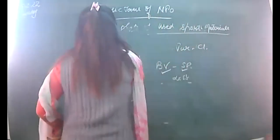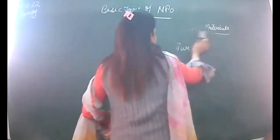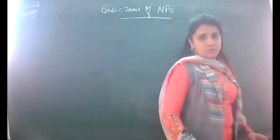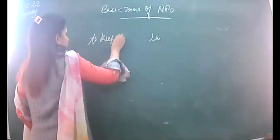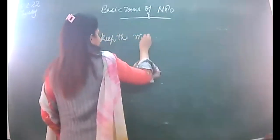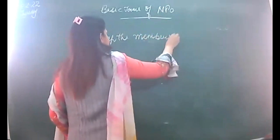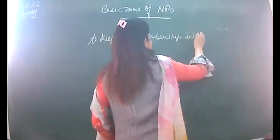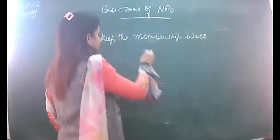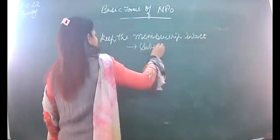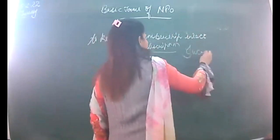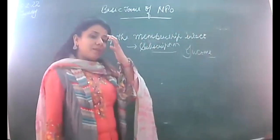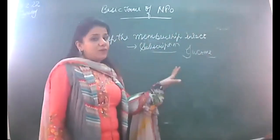Now we move to a very important related question: subscriptions. In order to keep the membership of the organization intact, members are supposed to pay an annual charge, which we call subscription. From the NPO's point of view, it is going to be income. But we also have outstanding subscription and advanced subscription to discuss.